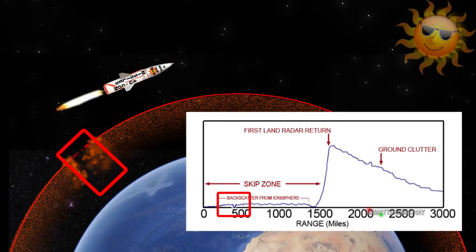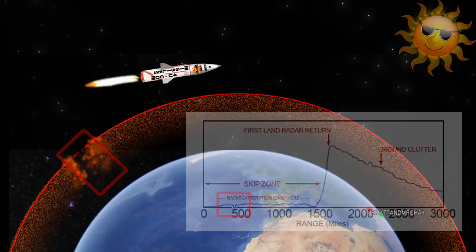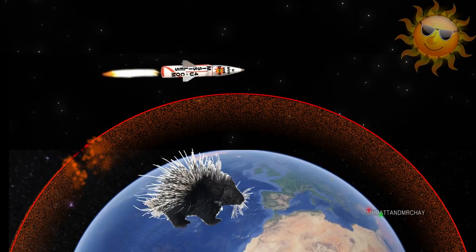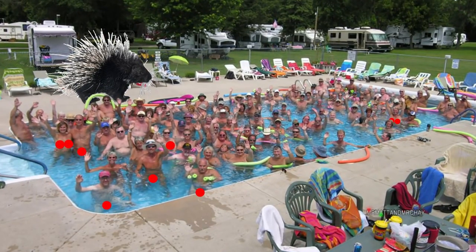It may not look much to you, but for the Soviets monitoring the radar, it might be picked up as quickly as a giant porcupine in a nudist resort, in the swimming pool during pool party time.